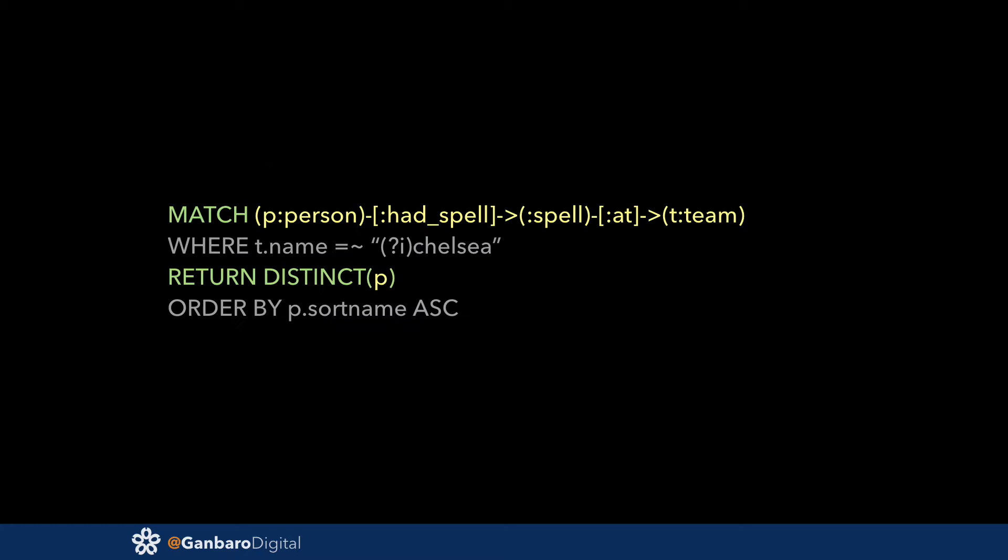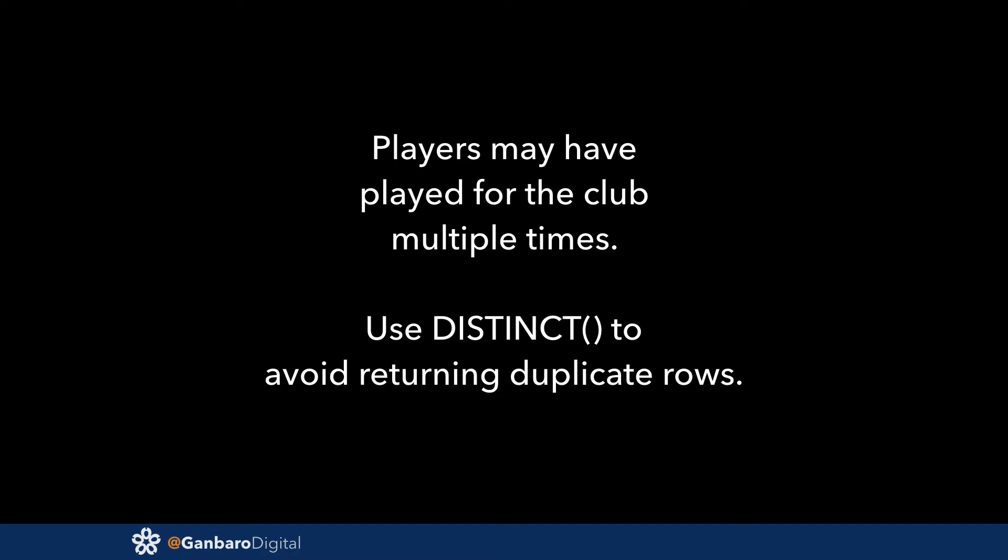The second thing to talk about is duplicate rows. Some players may have played for the club more than once — they may have been sold and then come back. Neo4j's results are row-oriented; they're not an object graph that comes back. The DISTINCT keyword is very handy to filter out duplicates, and it's normally the first tool I reach for if we're seeing duplicate data on the live website.